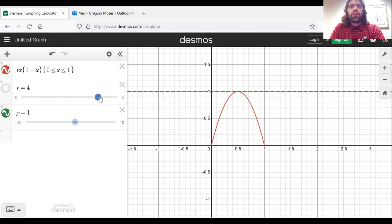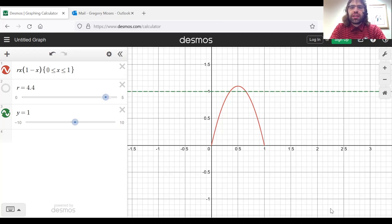If r were allowed to be greater than four, that would no longer be the case. So our motivation here...